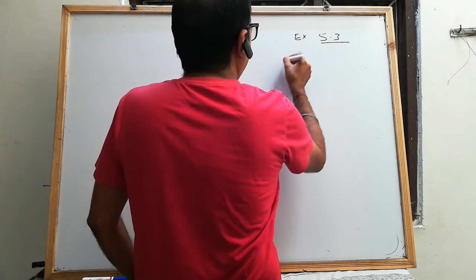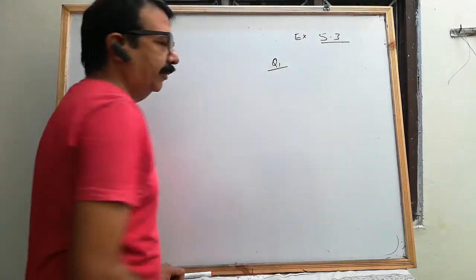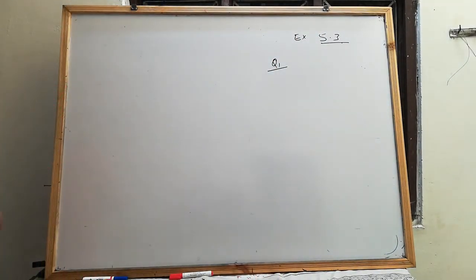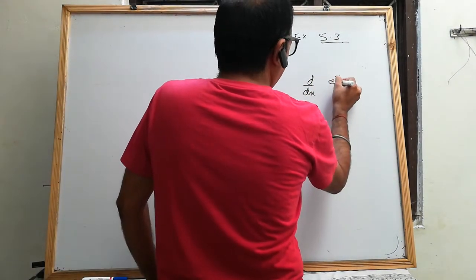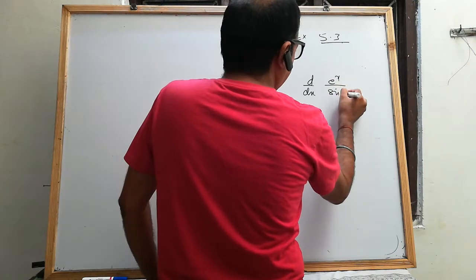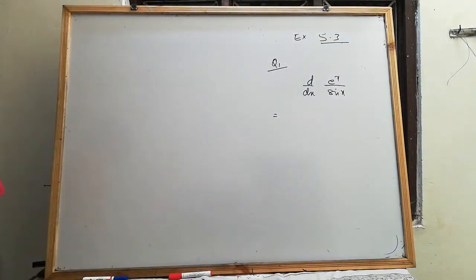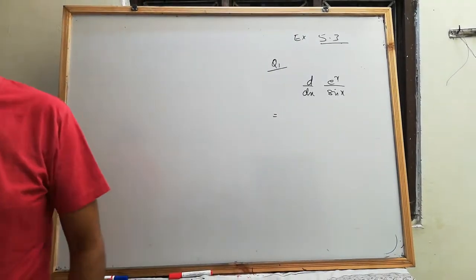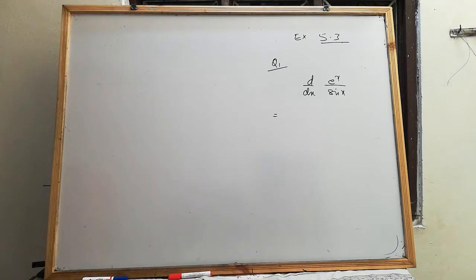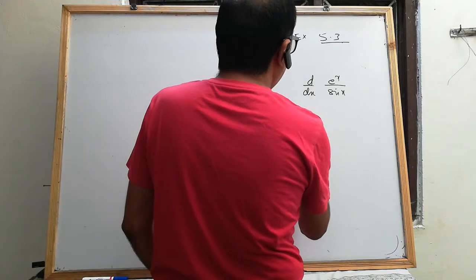Exercise 5.3, question number one: d/dx of e to the power x upon sin x. For this we use the quotient rule — it's a division of two functions, so we apply the quotient rule.